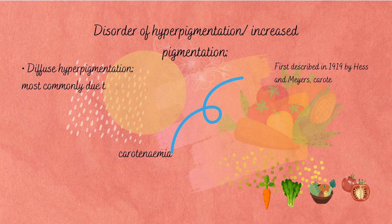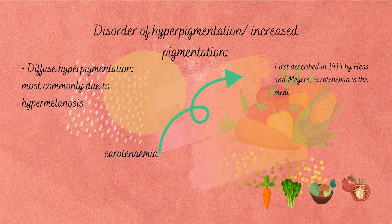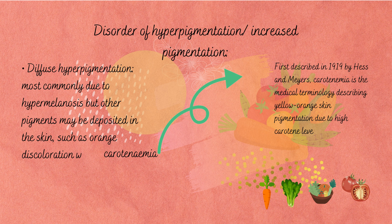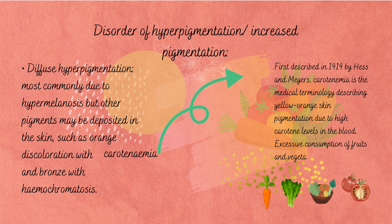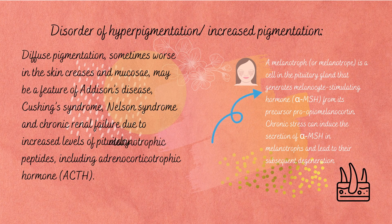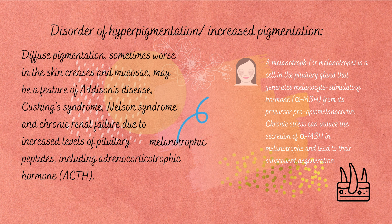Other pigments may also be deposited in the skin, such as orange discoloration with carotenemia and bronze with haemochromatosis. First described in 1919 by Hess and Meara, carotenemia is the medical term describing yellow or orange skin pigmentation due to high carotene levels in the blood. Excessive consumption of fruits and vegetables high in carotene content is often the culprit.